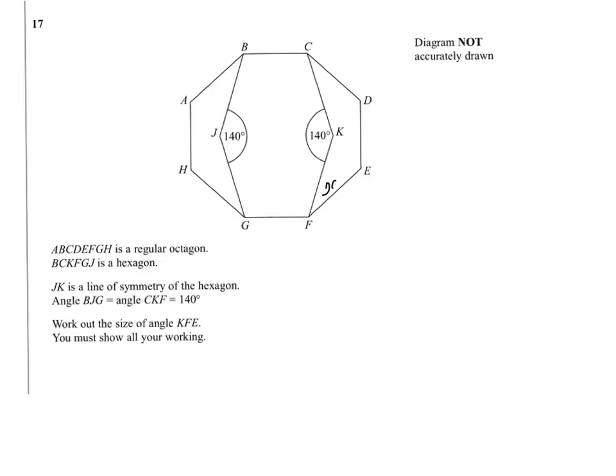Now, as we've got symmetry, then X will also be the same as angle KCD. I'll just try and mark that in. So if we can find these two angles here and the angle at K, then we can start to get somewhere with the problem.